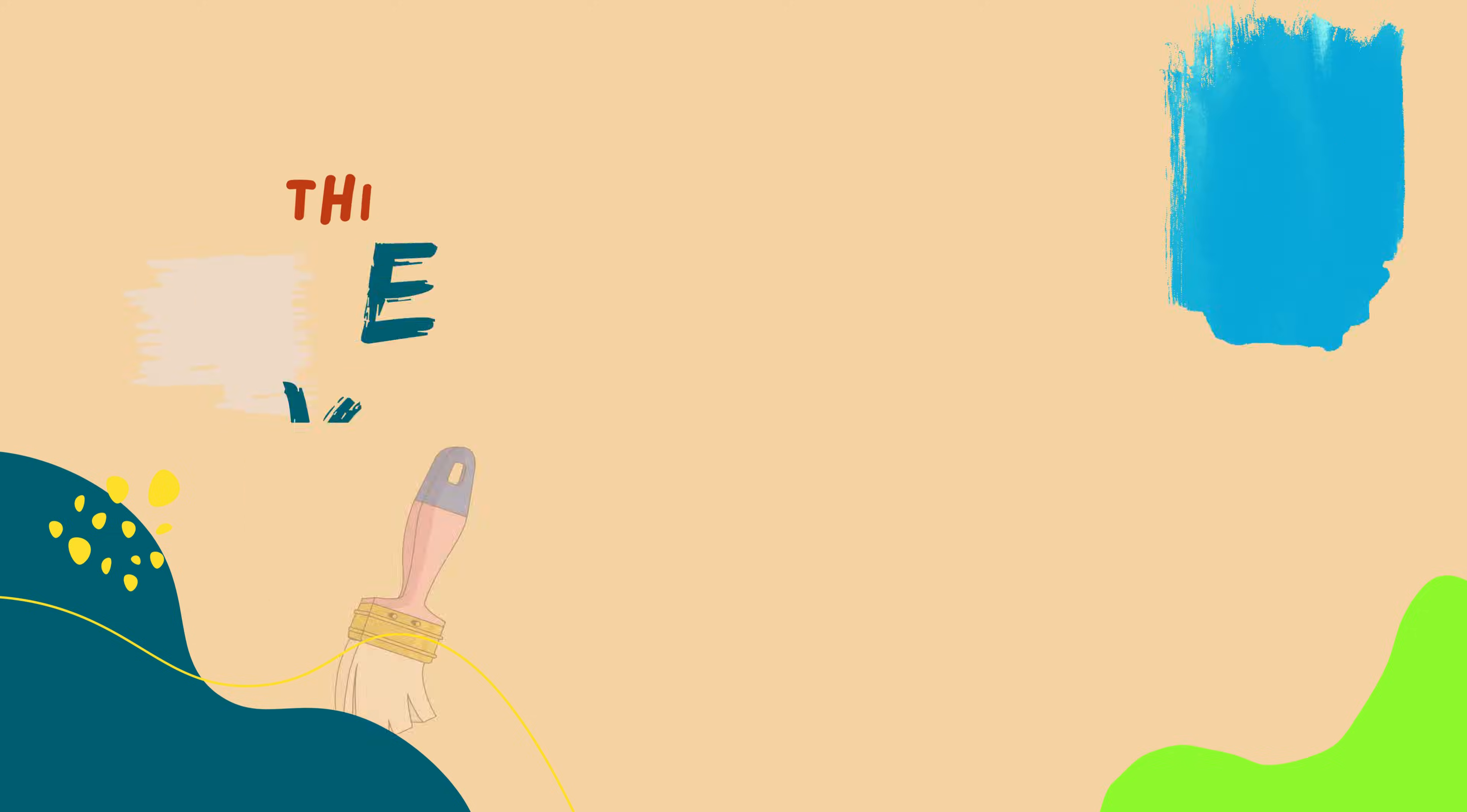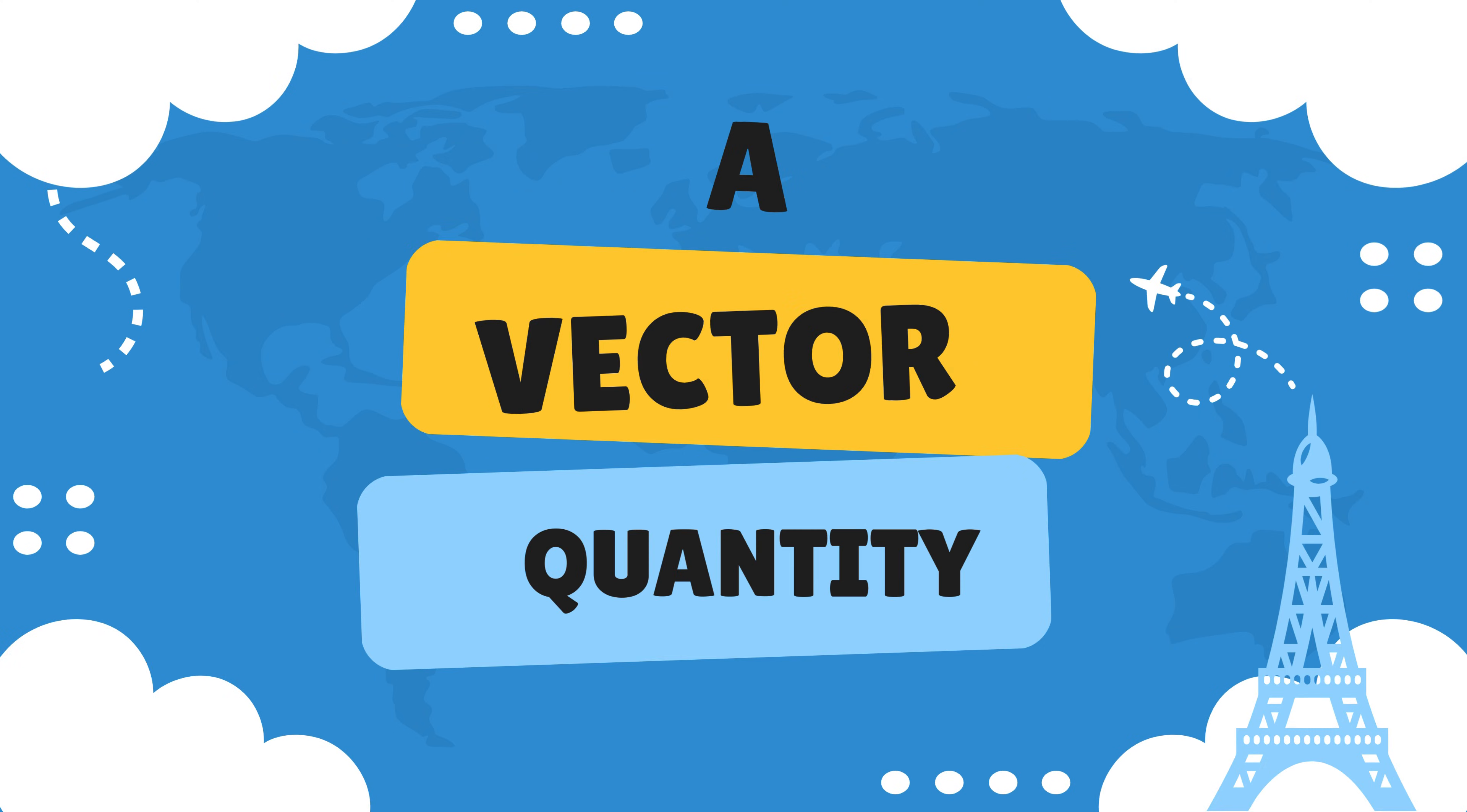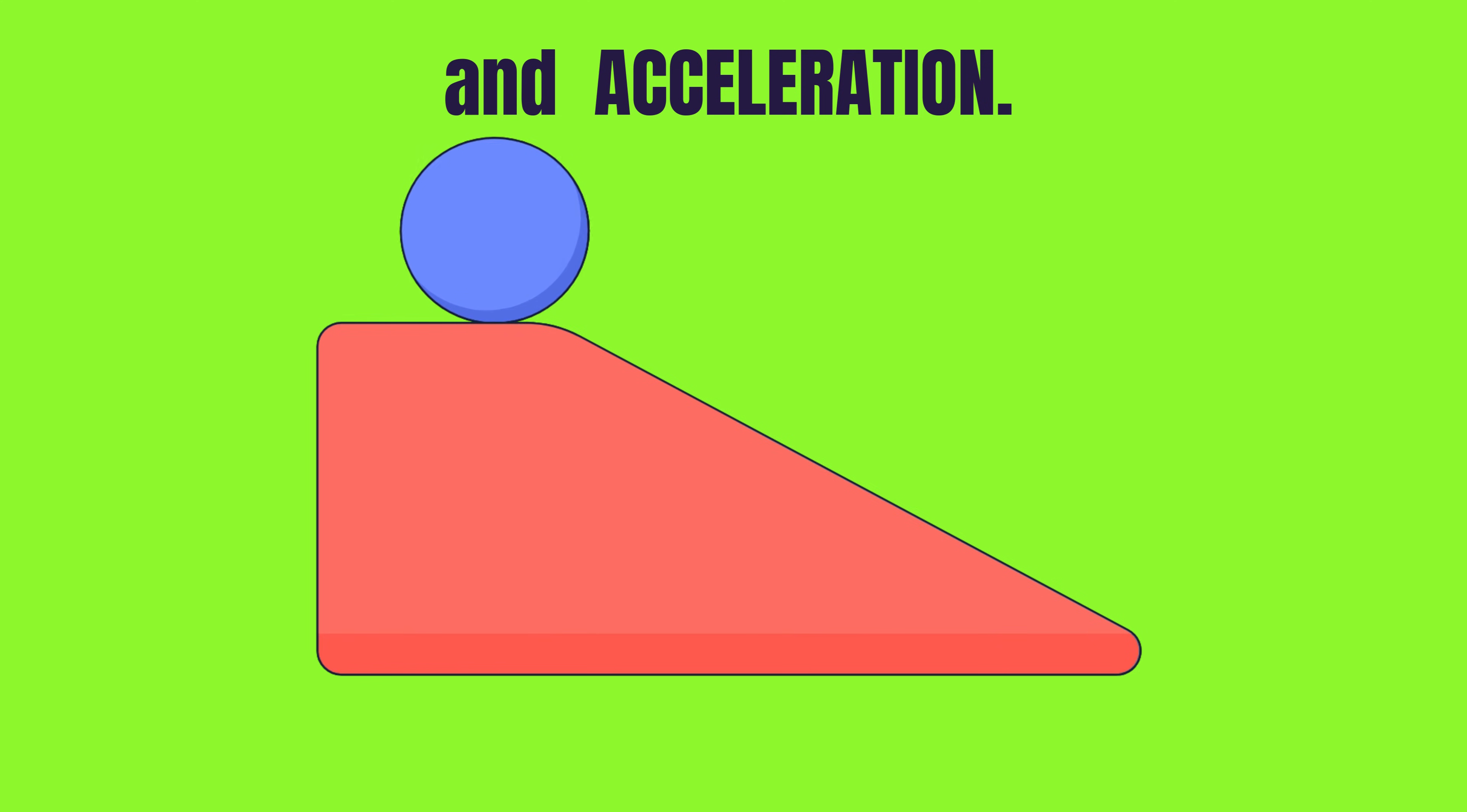I would also need the direction to the store from my current location. That's exactly what a vector is. A vector includes an extra piece of information that distance alone doesn't have: direction. Therefore, a vector quantity has both magnitude and direction. Common examples of vector quantities include force, displacement, velocity, and acceleration.